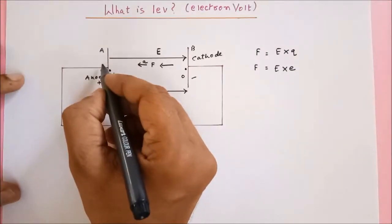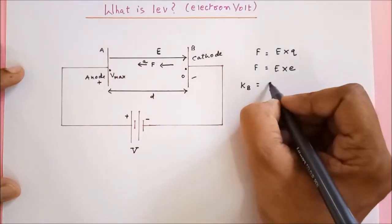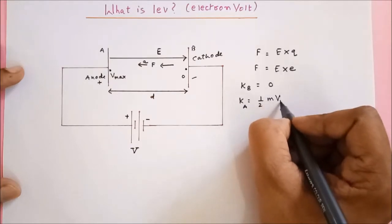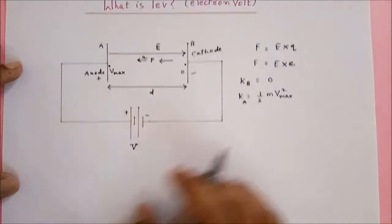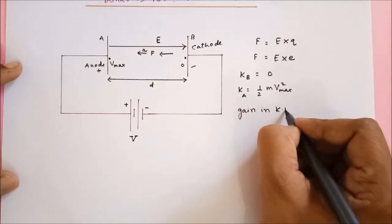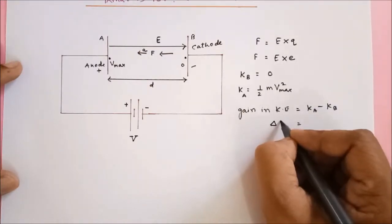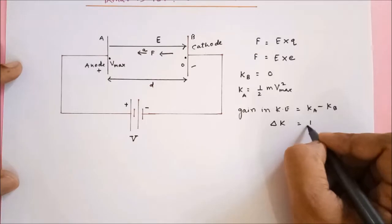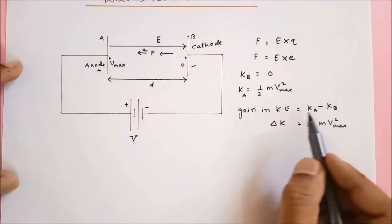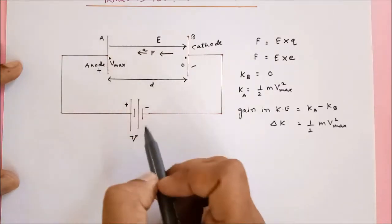Let's call this point A and this point B. So the kinetic energy of the electron at B would be equal to 0, and the kinetic energy of the electron at A would be equal to half M V max squared. So the gain in kinetic energy when an electron travels from B to A — a distance D — across the potential difference V is equal to half M V max squared.